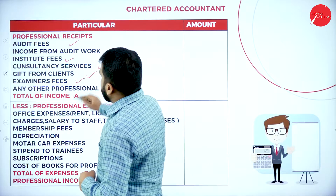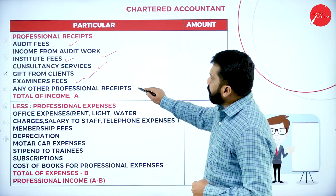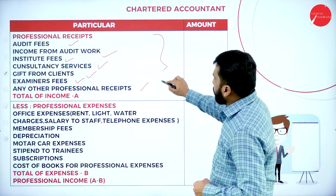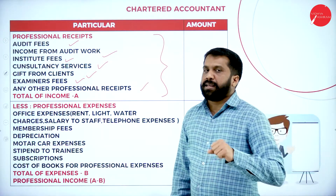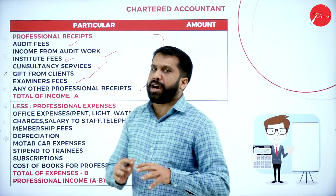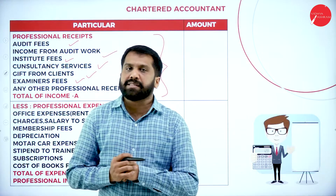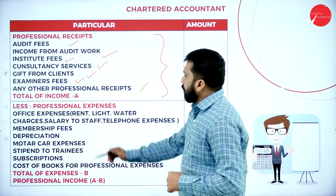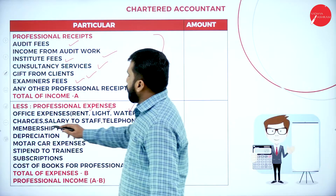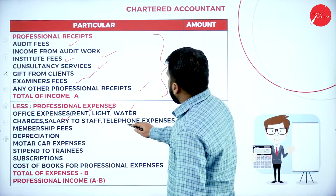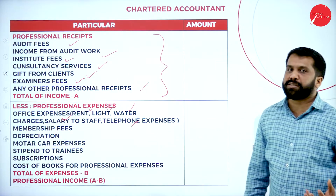Examiner's fees and any other professional receipts all come under professional receipts. Being a CA running an office, your expenses include rent, light, water, salary to staff, and telephone — all these come under your office expenses.